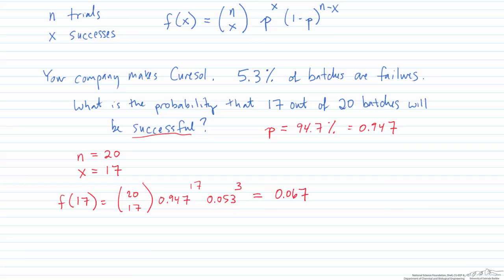Now what if I were to ask what is the probability that at least 17 out of 20 batches will be successful? This, the way it is written, is exactly 17. So if I said what is the probability that at least 17 out of 20 would be successful? That would be f of 17 plus f of 18 plus f of 19 plus the probability that all 20 of 20 are successful.